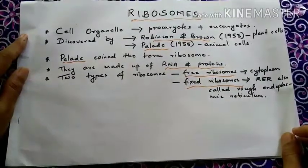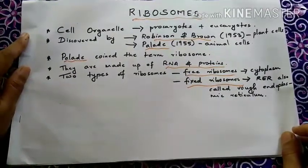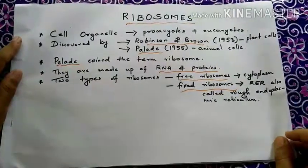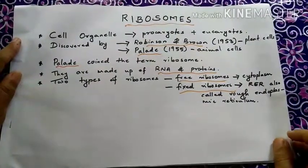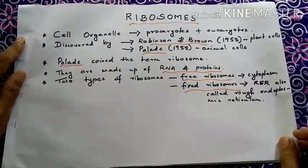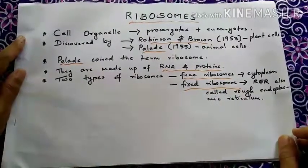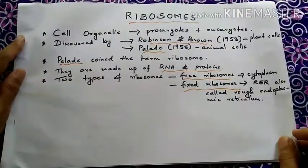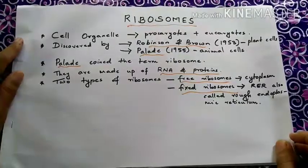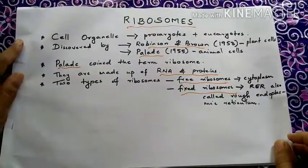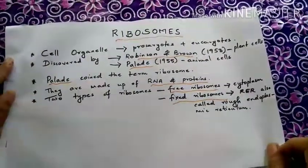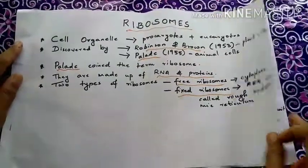There are two types of ribosomes: free as well as fixed. The free ribosomes are found scattered in the cytoplasm, and the fixed ribosomes are named so as they are attached to the endoplasmic reticulum, hence called the rough endoplasmic reticulum, also referred to as RER.